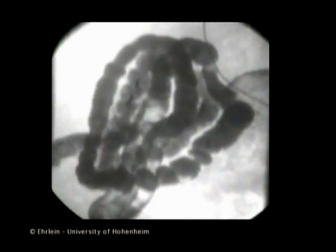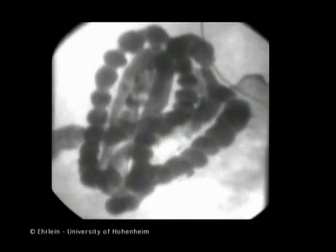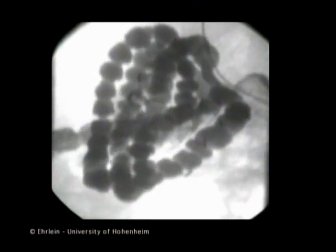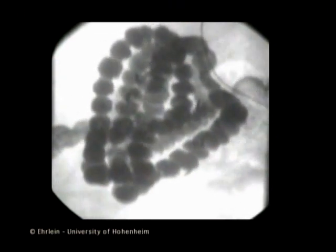Now, a peristaltic wave passes the spiral colon. Gas is propelled distally, followed by the flow of digesta. The rapid flow of the digesta indicates that the contents of the spiral loops are still liquid. Thus, the formation of fecal pellets is not yet complete. This process obviously occurs gradually during the slow transport of the digesta along the colonic coil.